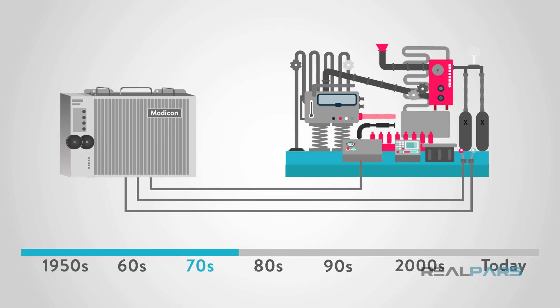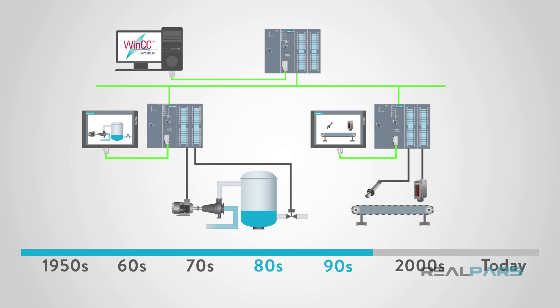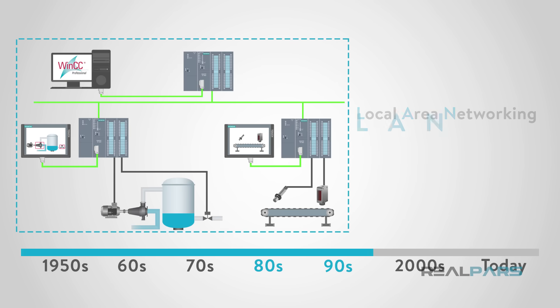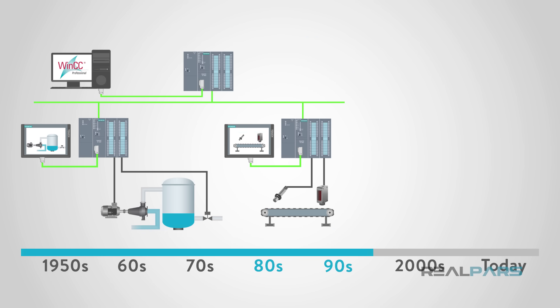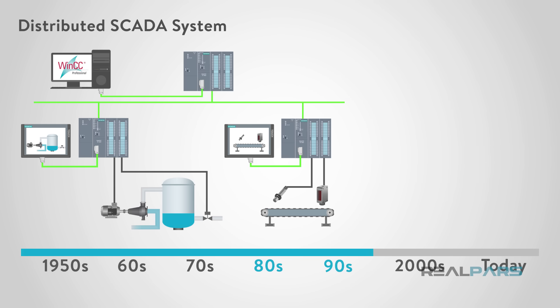SCADA back then was anything but practical. They were colossal machines — mainframes really — and since networking was not yet in the picture, they were stand-alone units. In the next couple of decades, the 80s and 90s, with computer systems getting smaller, the advent of local area networking or LAN and HMI software, SCADA systems were able to connect to related systems. Unfortunately, the communications were typically proprietary, which meant that connections outside of the particular vendor of the SCADA system were not allowed. This early SCADA was coined distributed SCADA systems.